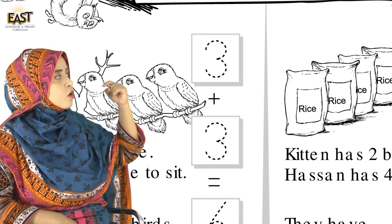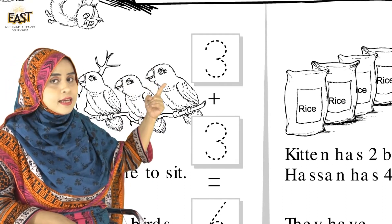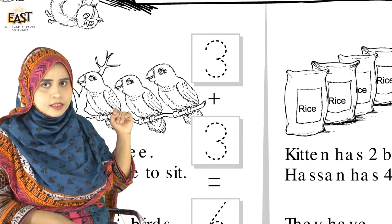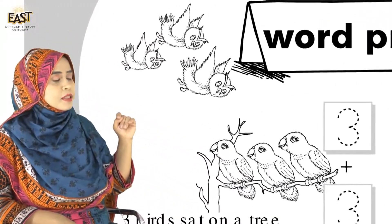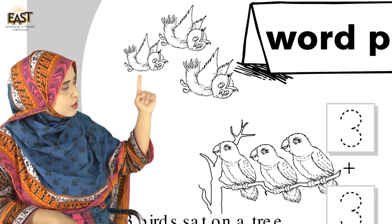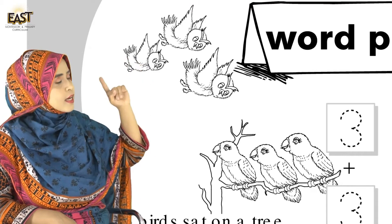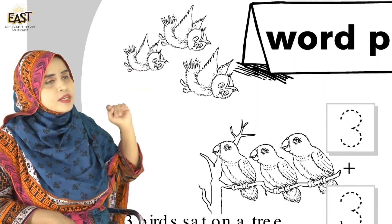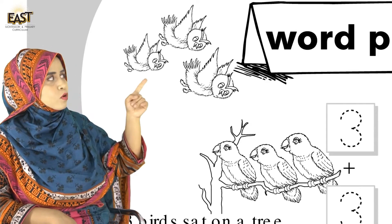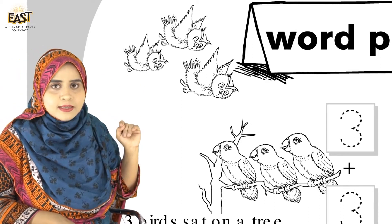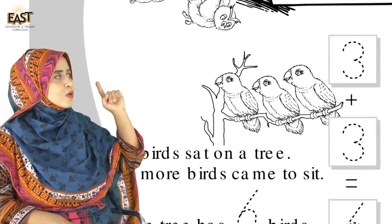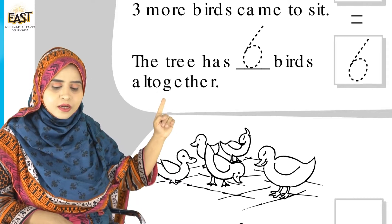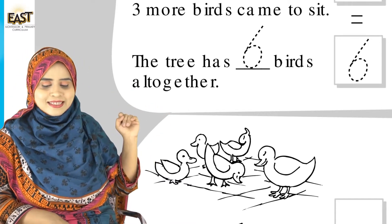The second box is also three, and the sign is add. This means 3 plus 3. Three more birds are added: 1, 2, 3. So how many altogether? 3, 4, 5, 6 — isn't it? 6 birds. Count them — yes, these are 6 birds. Very good! So the answer is 6. The tree has 6 birds all together.